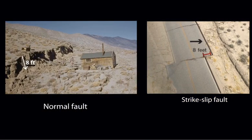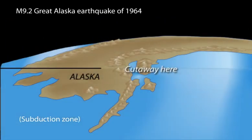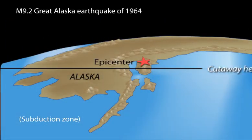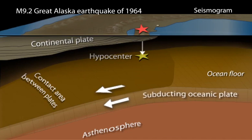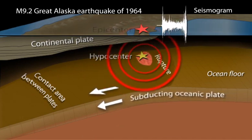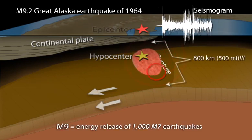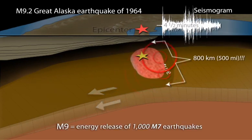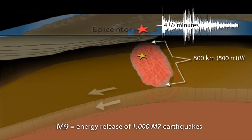All earthquakes, including the largest earthquakes like this one on a subduction zone fault, began at the hypocenter. Seismic and heat energy are continuously released as the rupture spreads, as though it were unzipping the rough surface of the fault, sticking and slipping during the chain reaction. The earthquake stops when the fault stops slipping.